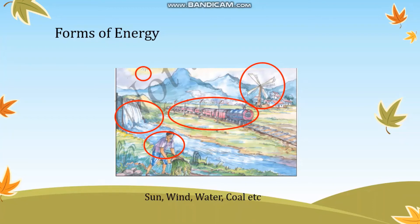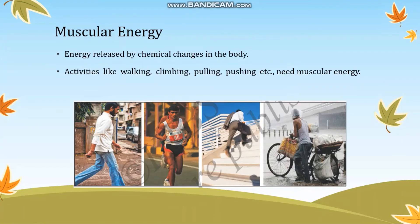Let us learn about these energies one by one. We will start with muscular energy. Muscular energy is the energy that is released by chemical changes in the body. The food that you take in undergoes chemical changes and gets converted to energy — this is known as muscular energy, or the energy of our body. Activities like walking, climbing, pulling, and pushing need muscular energy.